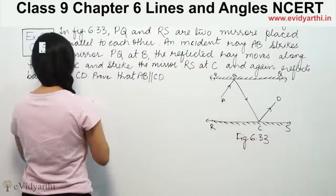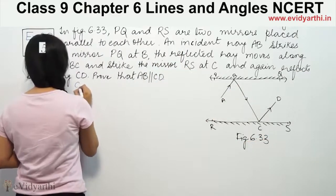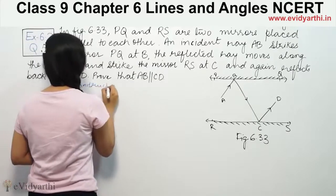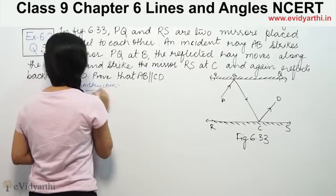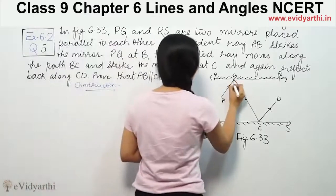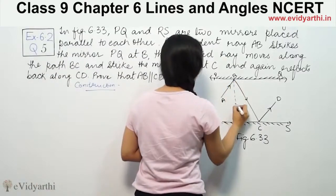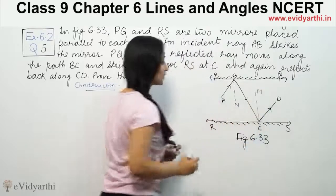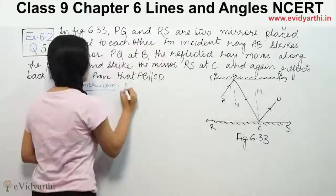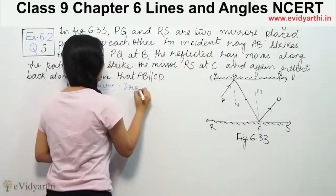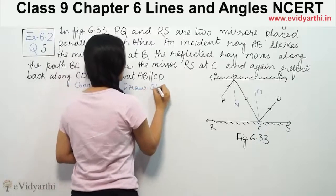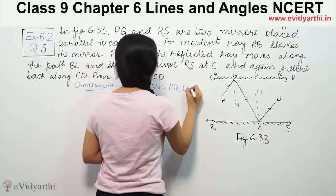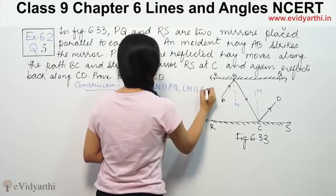So the best thing to do is construction. We draw BN and CM, where BN is perpendicular to PQ and CM is perpendicular to RL.